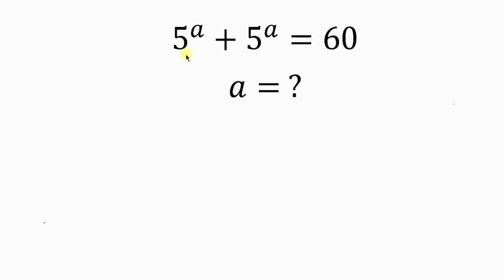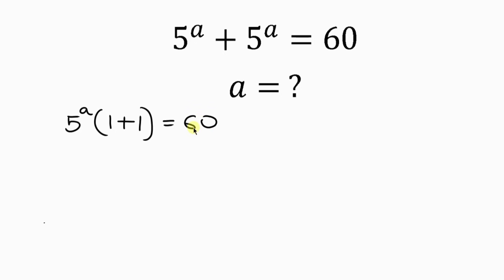Our first step will be to factorize. Notice that 5 to the a is common, so we can factor out 5 to the a. Open brackets: 5 to the a divided by 5 to the a is 1, plus 5 to the a divided by 5 to the a is 1. Close brackets, and this is equal to 60. Simplifying, we have 5 to the a times 1 plus 1, which is 2, and this is equal to 60.